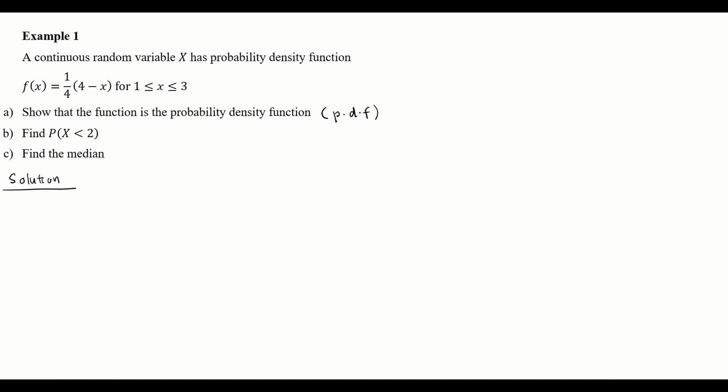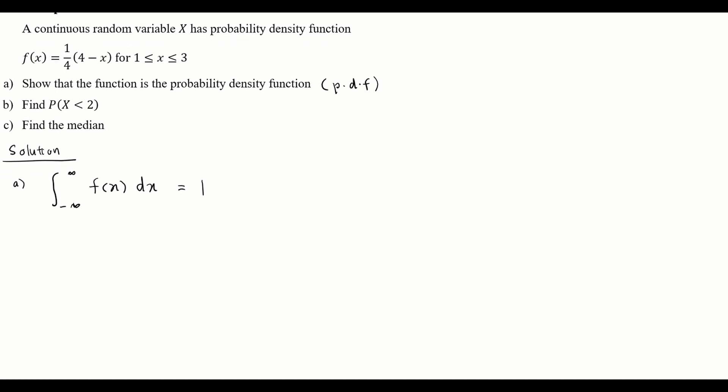For part a, for a continuous random variable, the probability density function must satisfy the condition that the definite integral from negative infinity to infinity of f(x) equals 1. If we can show that the total area under the curve — the total probability — equals 1, then the function is a PDF.